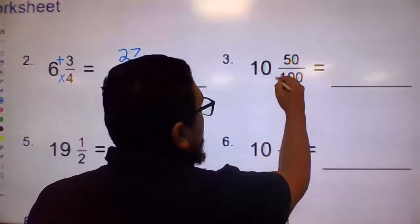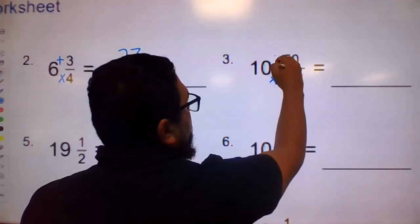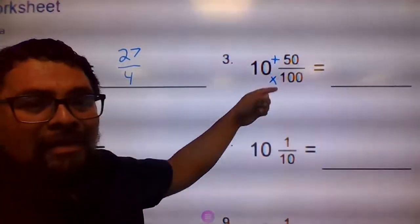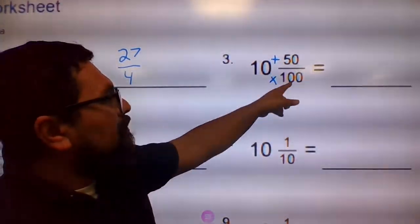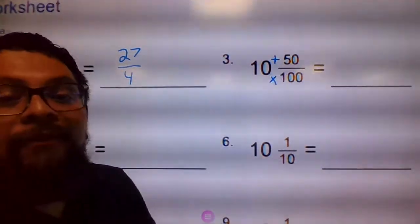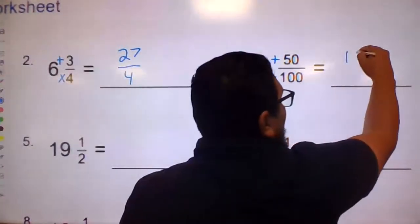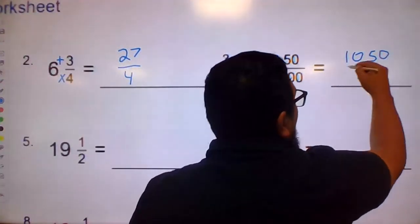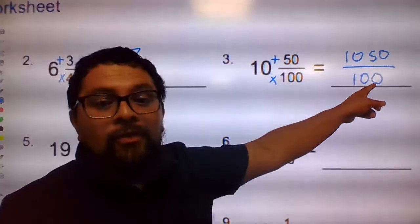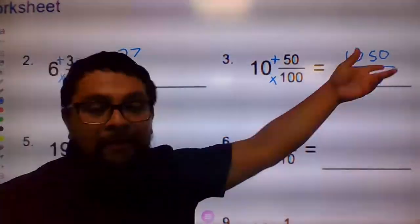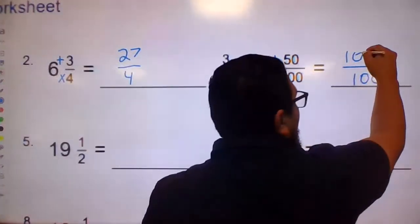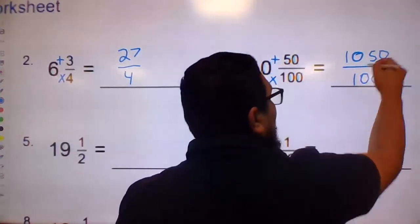And the last one: 100 times 10, plus 50. If you don't know how to multiply by those, just add a zero. 100 times 10 is 1000, plus 50 is 1050. So 1050 over 100. You can simplify this one too if you want — I'll give you extra credit — but you can leave it as 1050 over 100.